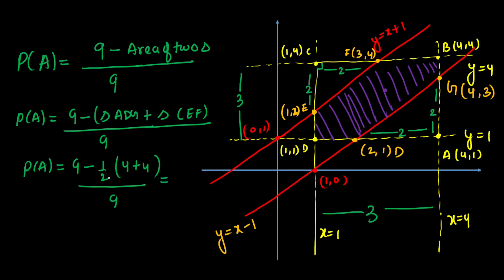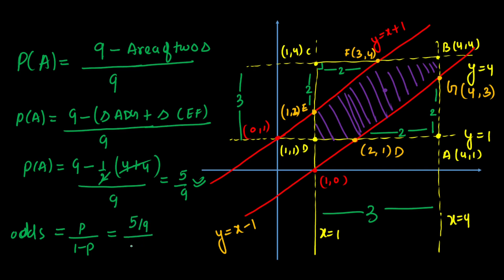So P(A) = (9 - 4) / 9 = 5/9. The probability that they meet in between is 5/9. The odds of meeting = P / (1 - P) = (5/9) / (4/9) = 5/4. So the final answer is that the odds in favour of meeting are 5:4.